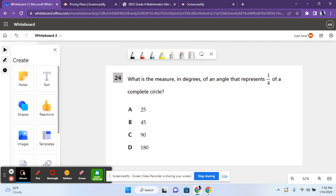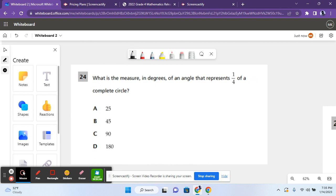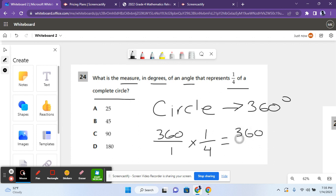Let's move on to the next question. For question 24 it says what is the measure in degrees of an angle that represents one-fourth of a complete circle? So a circle is 360 degrees. You have to multiply 360 times one-fourth, and there you get 360 over 4 if you multiply the numerators and denominators.